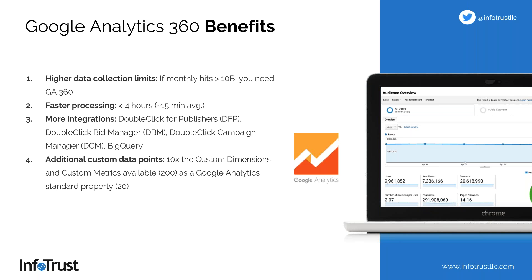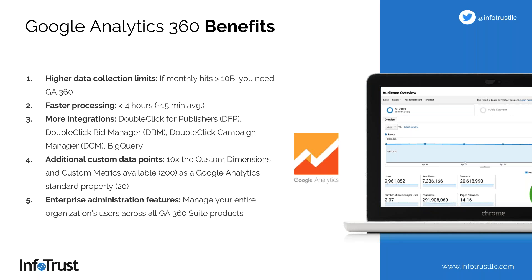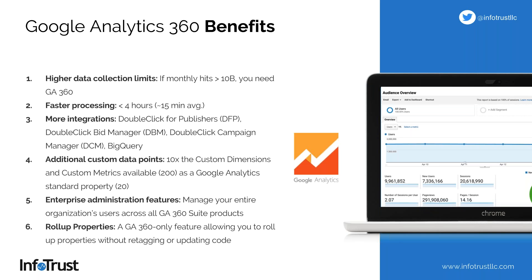More integrations are available with GA360. AdWords is always free, but DoubleClick for Publishers — which is obviously a big one for news and media companies — DoubleClick Bid Manager, Campaign Manager, and Google BigQuery are strictly for GA360 customers. There are also higher limits for custom data points: the standard version allows 20 custom dimensions and 20 custom metrics per property, while GA360 gives you 200 of each. Enterprise Administration features and Roll-Up Properties are also exclusive to GA360.